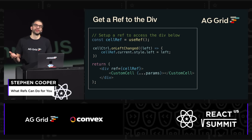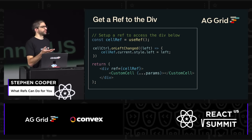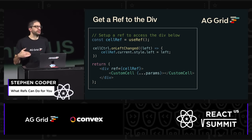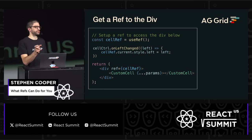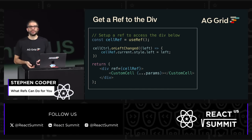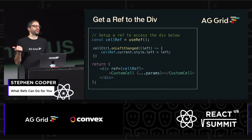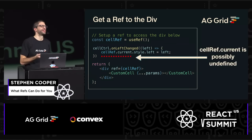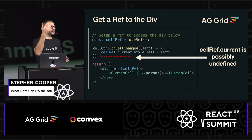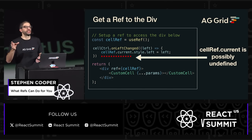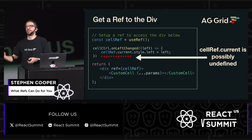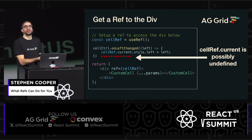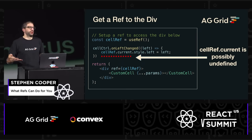This is where we can use ref. We create a ref — cellRef equals useRef — and then within our template we can set that to our ref property. Then we set up our cell controller and update the style manually. But can anyone see what might be the problem here? Well, the cellRef is possibly undefined. On the initial render, this onLeftChange method might actually run this logic and run the callback to try and set this left property. But at that point in time, the cellRef hasn't been assigned yet, so it's going to blow up.